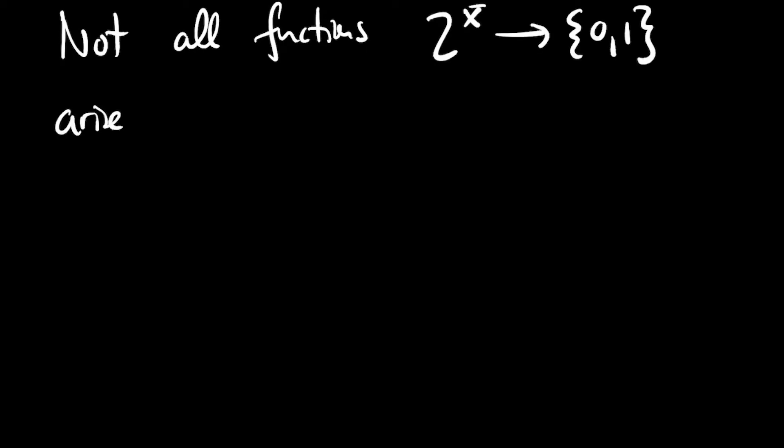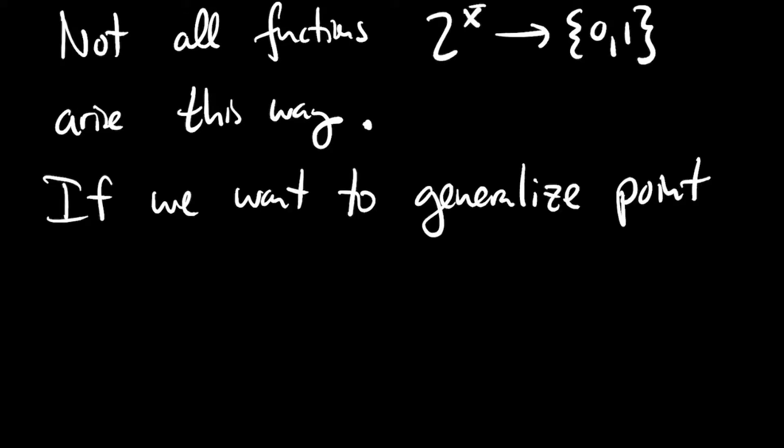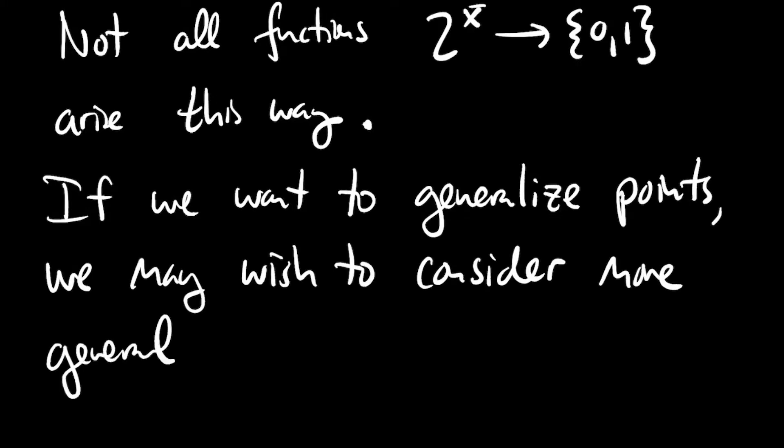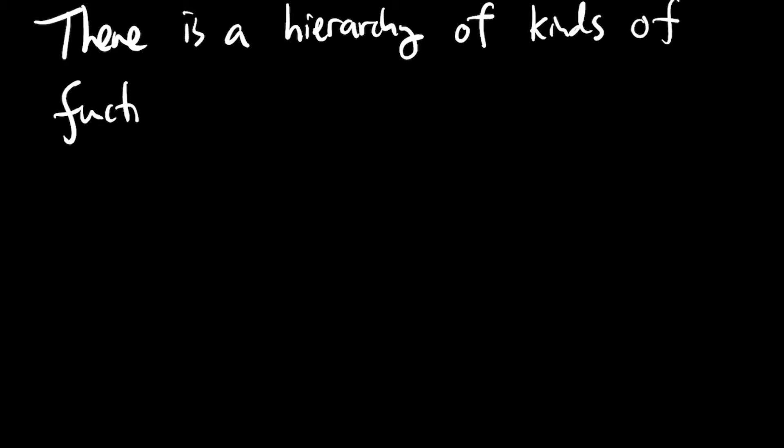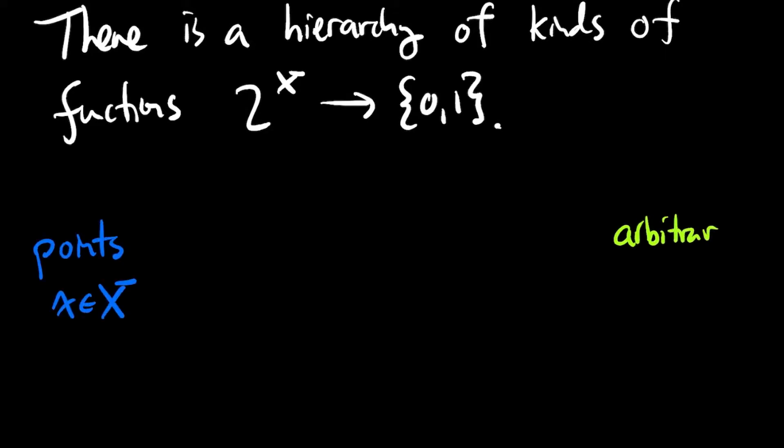So I want to think of a point as a function from the power set of X to {0,1}. Now, not all functions from the power set of X into {0,1} arise in the way that I just described from points. So this gives us a way to generalize the concept of points as some more general kind of function from the power set of X into {0,1}. Now, there's a hierarchy of kinds of functions from 2^X into {0,1}, but on one hand, the most restricted kind look like points in X, and on the other extreme are arbitrary functions from 2^X into {0,1}.